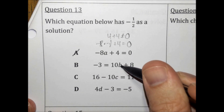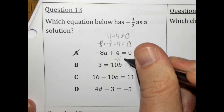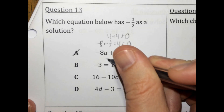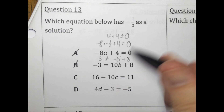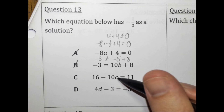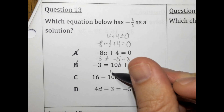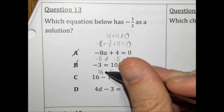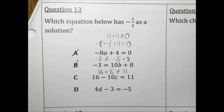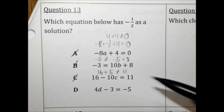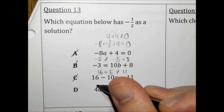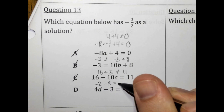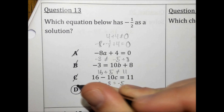For choice B, plugging in negative 1 half: 10 times negative 1 half is negative 5. Negative 5 plus 8 is positive 3, not negative 3. So it's not choice B. For choice C: negative 10 times negative 1 half is positive 5. 16 plus 5 equals 21, not true. So it's not C. For choice D: 4 times negative 1 half is negative 2. Negative 2 minus 3 is negative 5. That is true. So it is choice D.